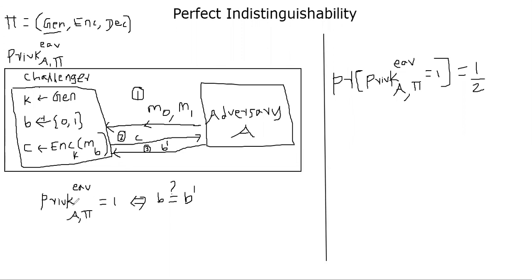And we say the experiment output is 1, meaning the private key eavesdropping experiment outputs 1, if the adversary is able to predict the bit B prime, same as the bit B, which was used by the challenger. So the challenger, let's assume challenger was choosing 0, 0 bit. So in that case,